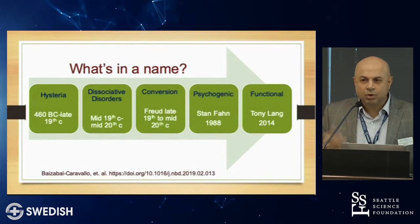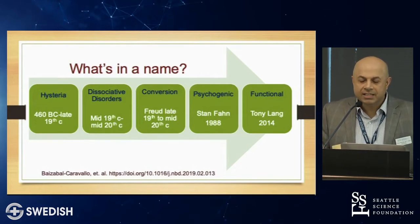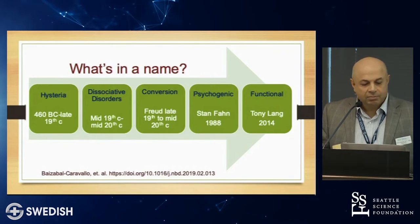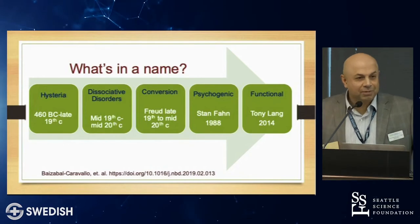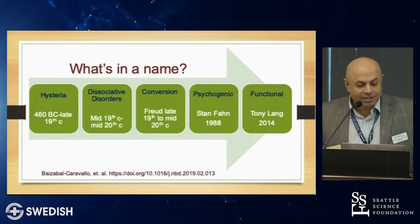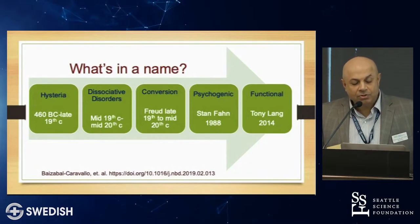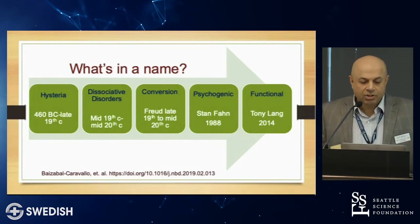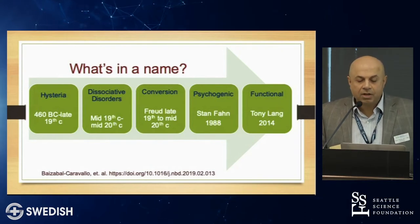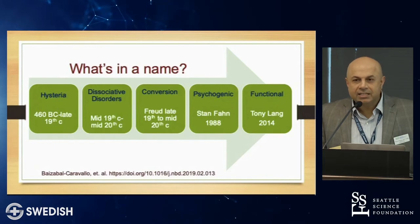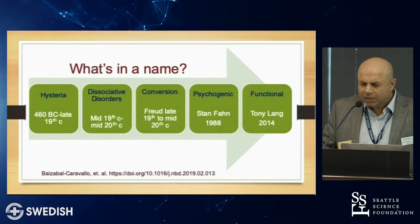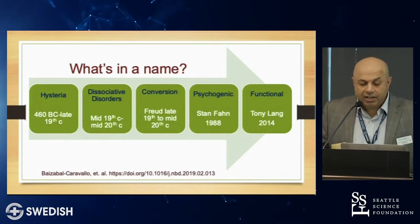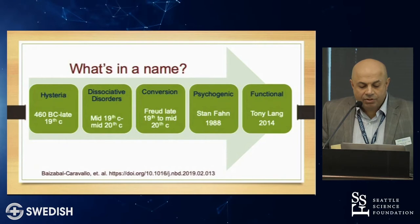Hysteria — the whole wandering womb — was a somewhat misogynistic idea that only women get functional movement disorders, which is incorrect. Although there is a higher proportion in women, men are affected as well. Dissociative disorders were used in the mid-19th to the 20th century, reflecting the psychological treatment prevalent during that time. Freud called it conversion disorder in the late 19th to mid-20th century, a term still used by neuropsychologists and psychiatrists, but not as much by neurologists.